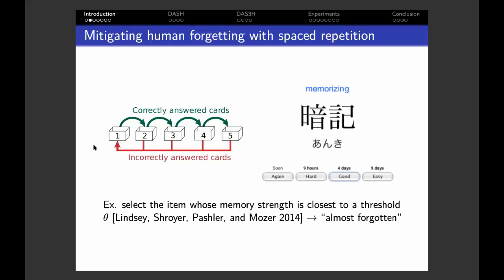The Leitner system uses a set of boxes and each number on each box indicates the frequency at which cards in this box are reviewed. In box one, every day; in box two, every two days, and so on. Learners try to recall the cards in their daily deck. If they manage to recall a card, it is added to the next box, which is less frequently reviewed. If they fail to recall the card, it is put in the very first box, which is reviewed every day.